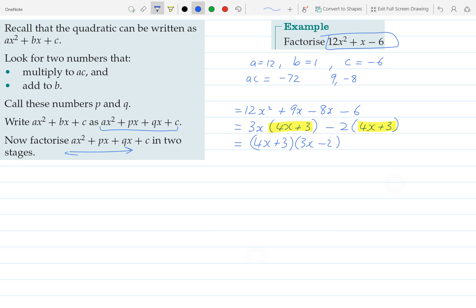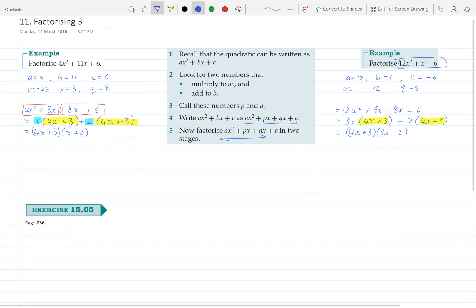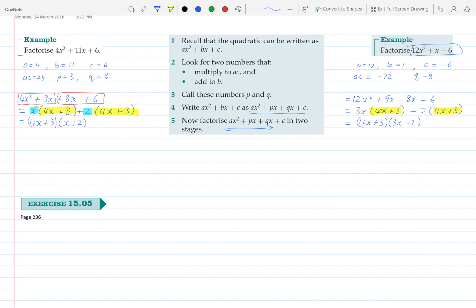And so now it is fully factorised. So this method is quite reliable and it makes it easy to factorise these two brackets. I'll get you to go have a look at 15.05, thank you.